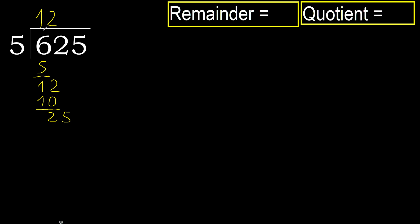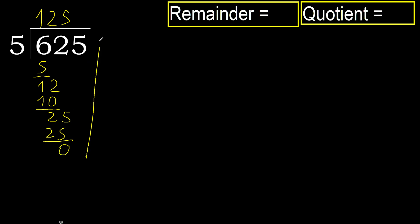Next: 25. 5 multiplied by 5 is 25, which is not greater. Subtract.